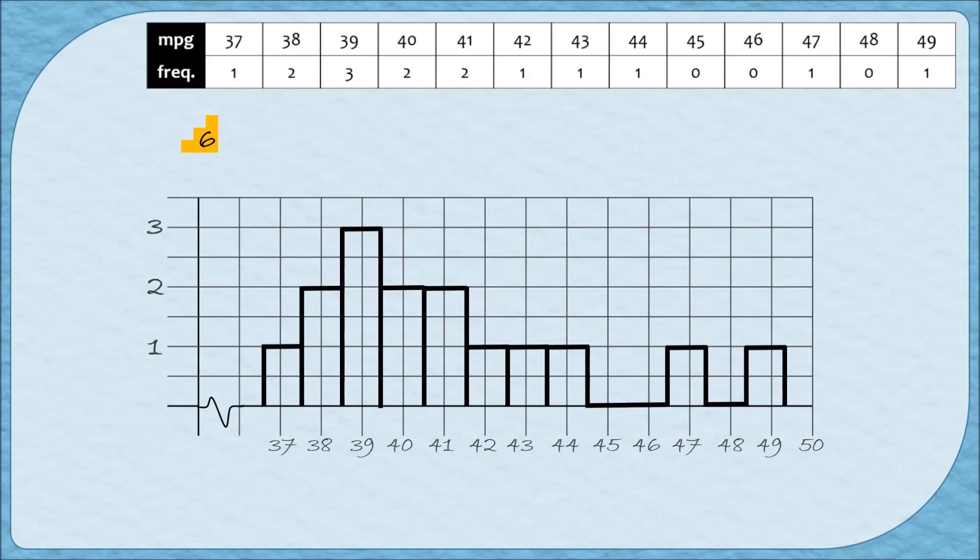Because these were the fuel economies for some mid-sized cars in 2015, my title should reflect that information. So I'm going to call this highway fuel economy of mid-sized cars. On the vertical axis, we recorded the frequencies, so we want to label frequency. And the horizontal axis was our fuel economy, which is measured in miles per gallon, so we should label it accordingly.